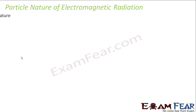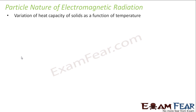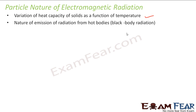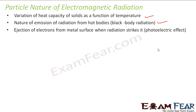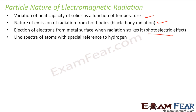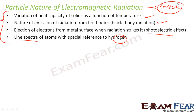Now let's talk about the particle nature of electromagnetic radiations. In particle nature, I'll talk about the variation of heat capacity as a function of temperature. We'll talk about the nature of emission — the black body emission. We'll talk about the photoelectric effect, where electrons are ejected from the metal surface. And we'll talk about the line spectra, especially with hydrogen. We'll talk about all these, which proves that electromagnetic radiations have particle nature. Till now what we have proved? We have proved that they have wave nature. Now we'll prove that they are like particles.